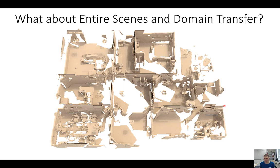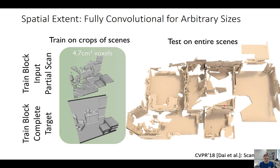The problem in 3D is you don't know how big the scenes are at test time — they can have basically any arbitrary size. In the ScanComplete work, we used fully convolutional networks. With fully convolutional networks, we can train on crops of scenes and then test on the entirety of scenes. We trained on crops of a couple of cubic meters, using random crops of these large scenes. Then we test on the entirety of the scene in one forward pass.